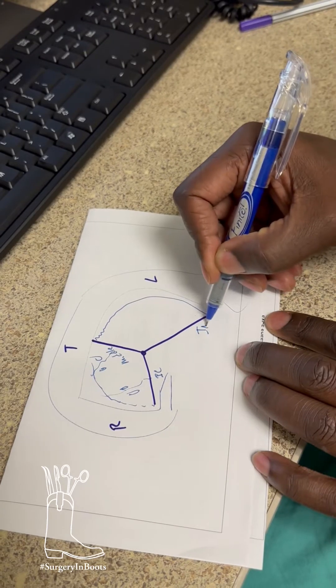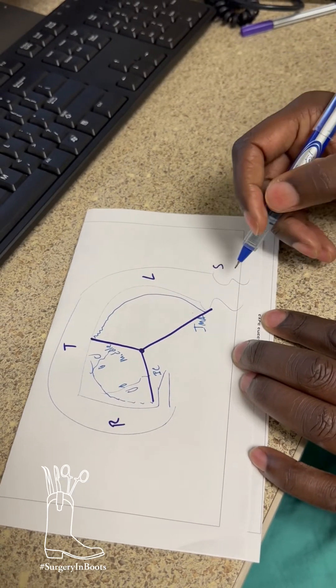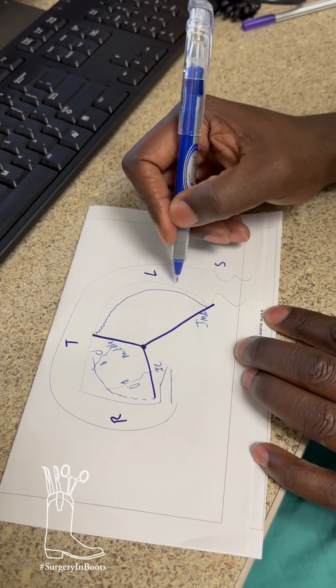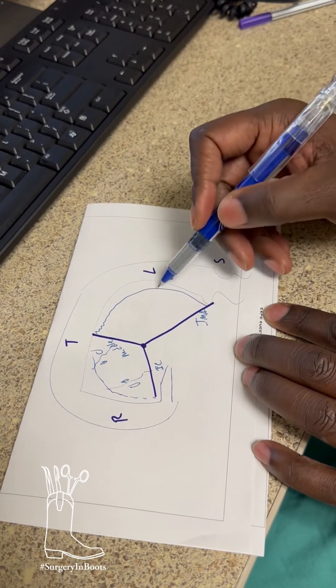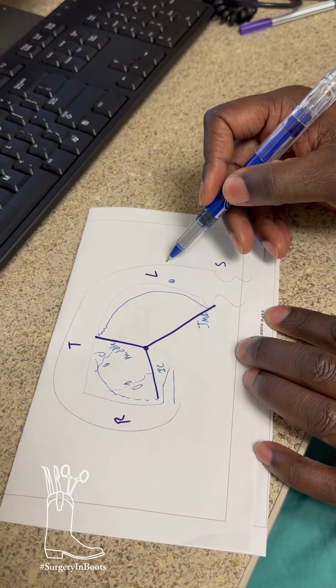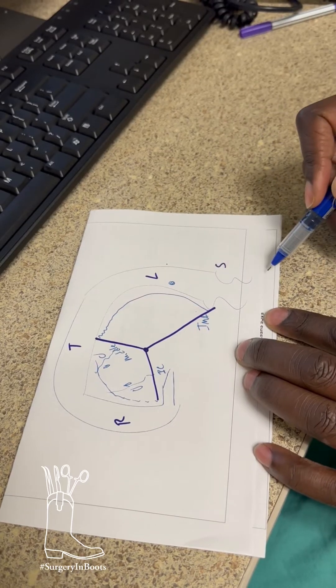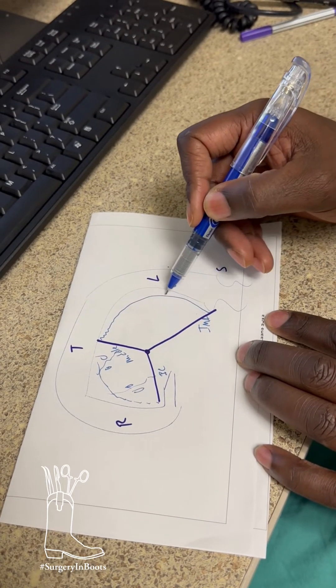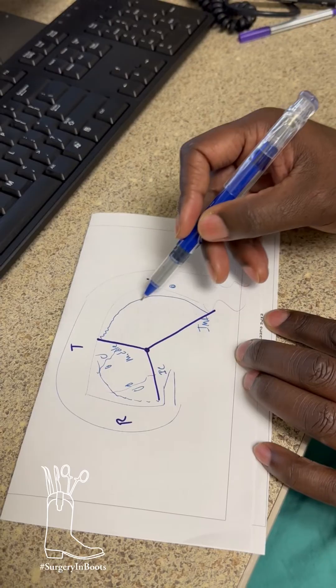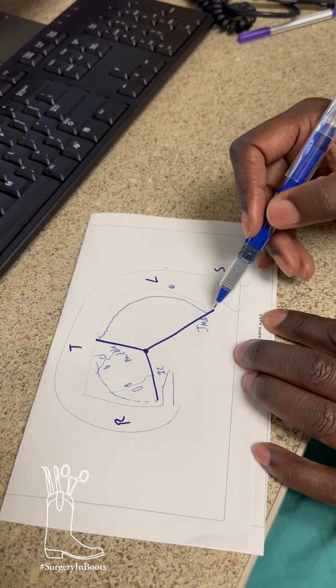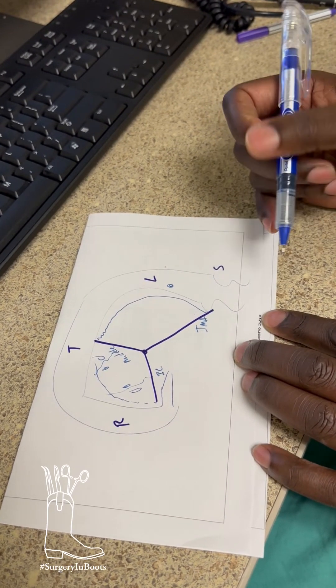So this is the IMA. So the IMA is feeding the sigmoid colon. So if you have a lesion right here in the left colon, and you come through and take this and the sigmoid, you leave, you're hoping that this artery is patent. It's so small sometimes, and it's not patent.